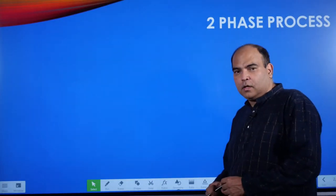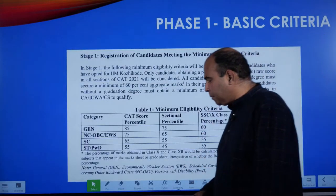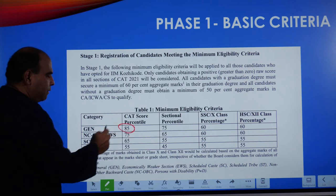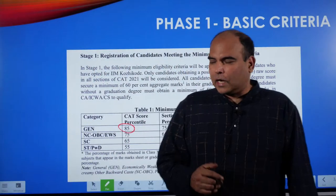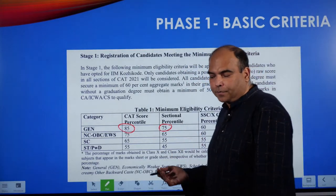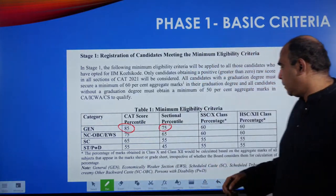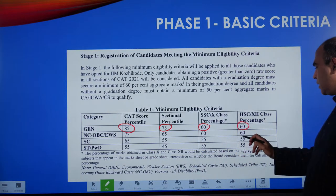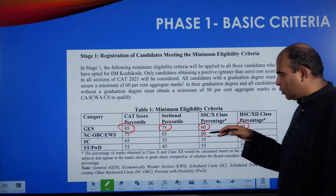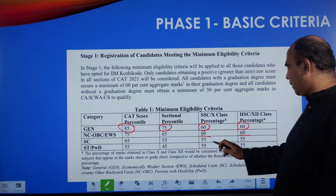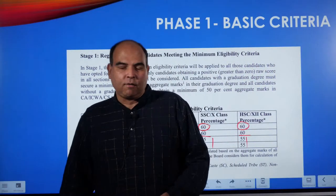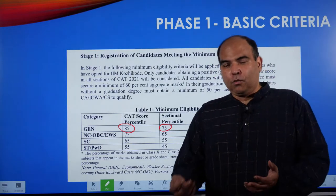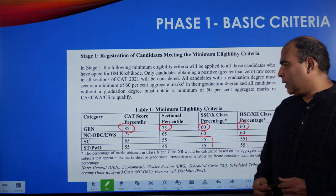IIM Kozhikode has a two-phase selection criteria. Phase one is the minimum percentiles. The CAT score minimum percentile is 85 overall, and the sectional percentile minimum is 75 on all three sections. There's an additional criteria: 60% in Class 10th and 60% in Class 12th. This is the minimum criteria for General category and NC-OBC and EWS candidates. For SC and ST, the minimum academic percentage is 55, so they are strict about the 10th and 12th requirement.